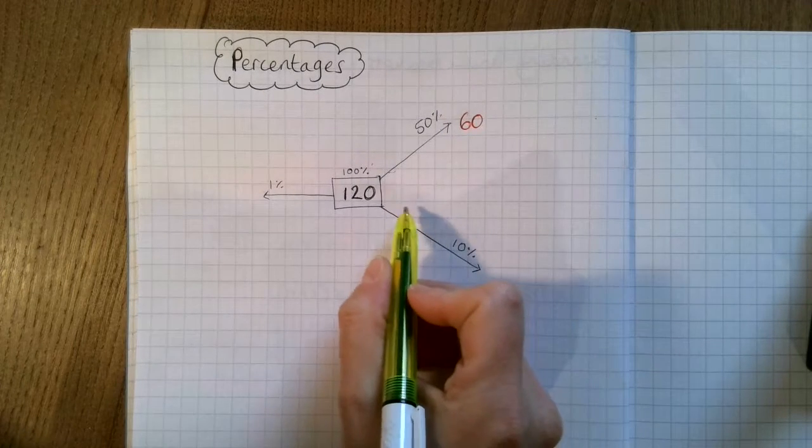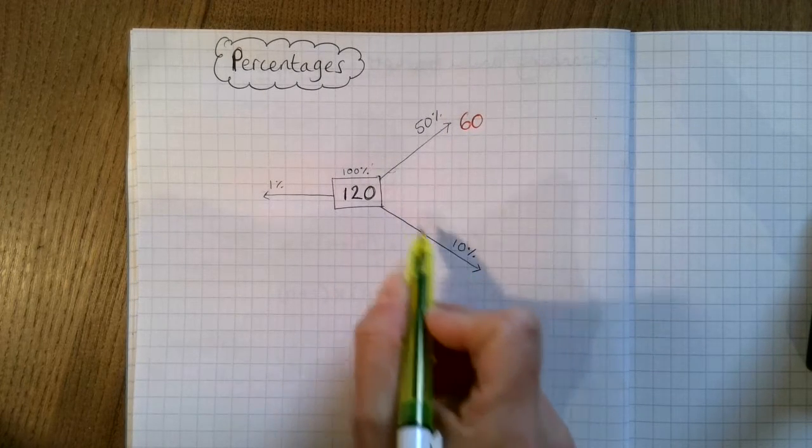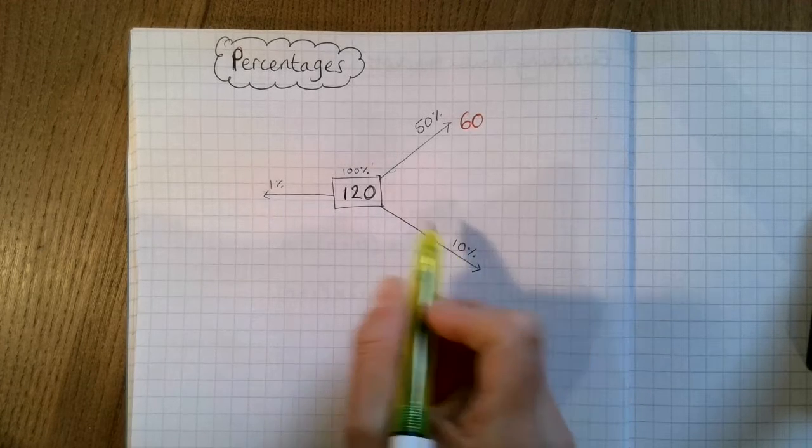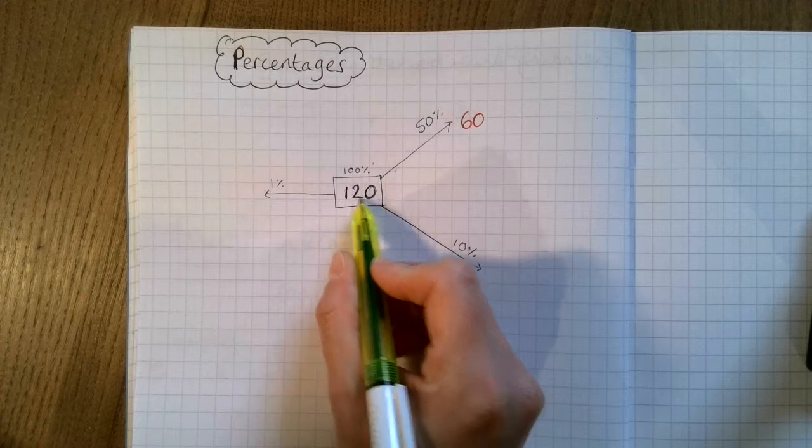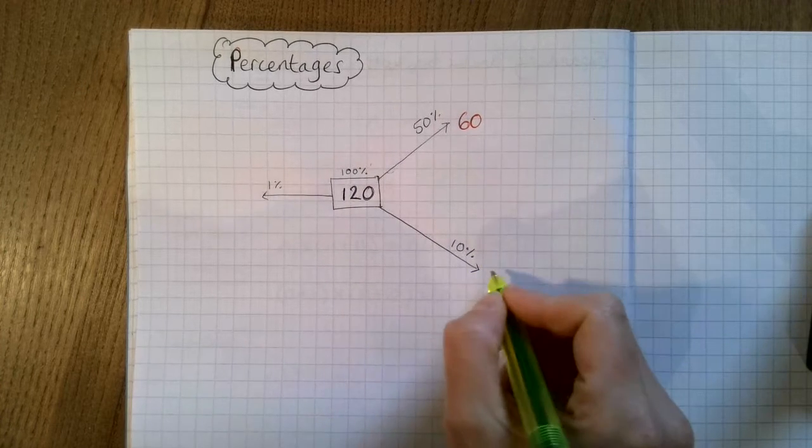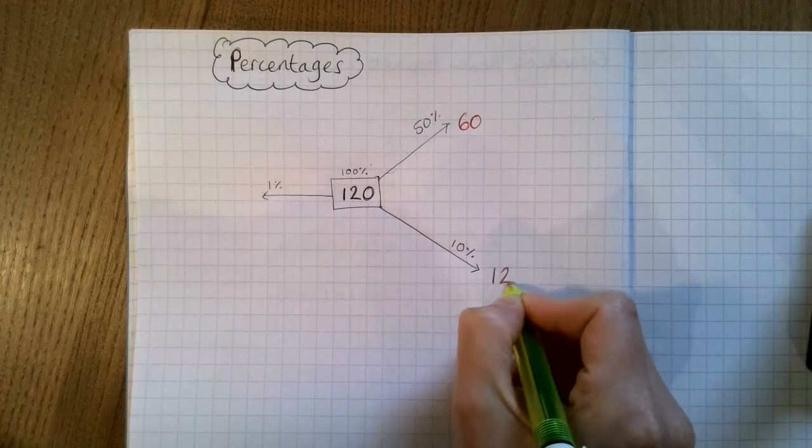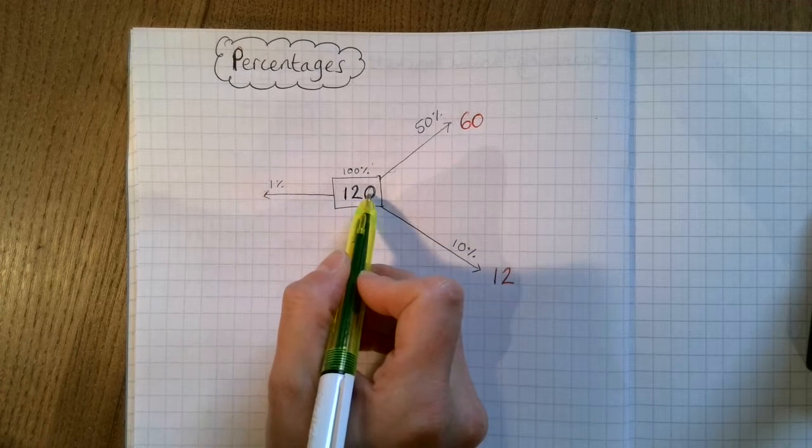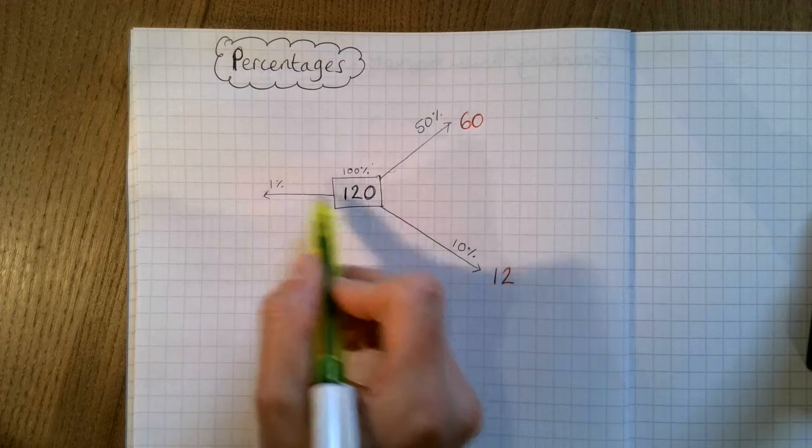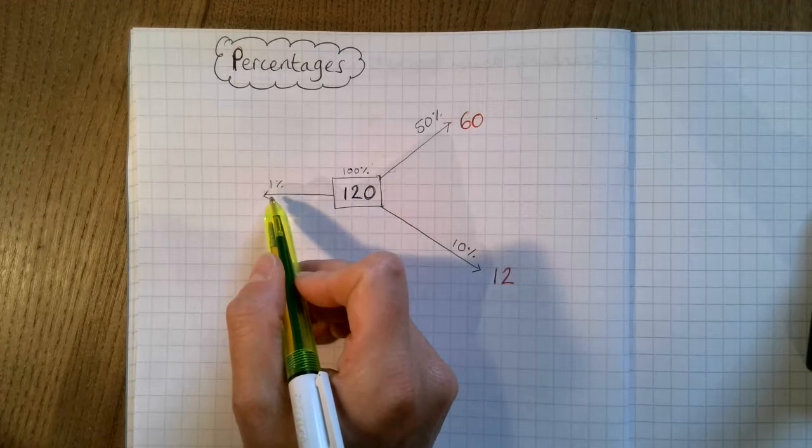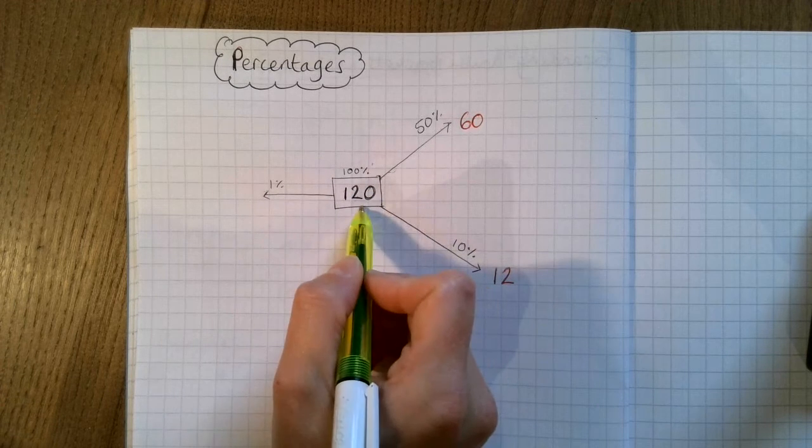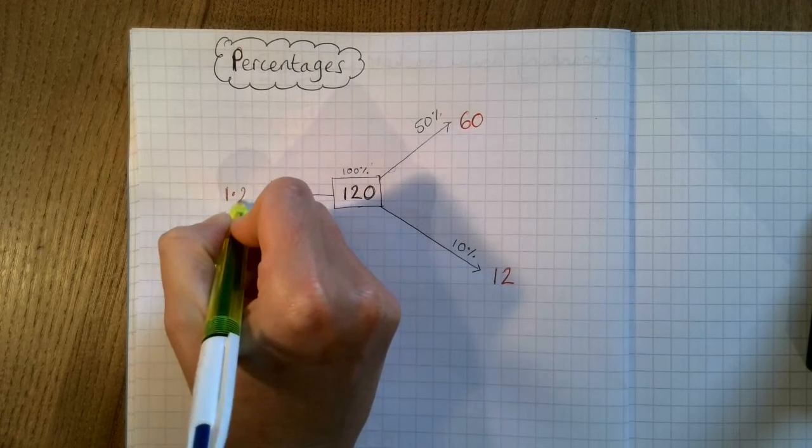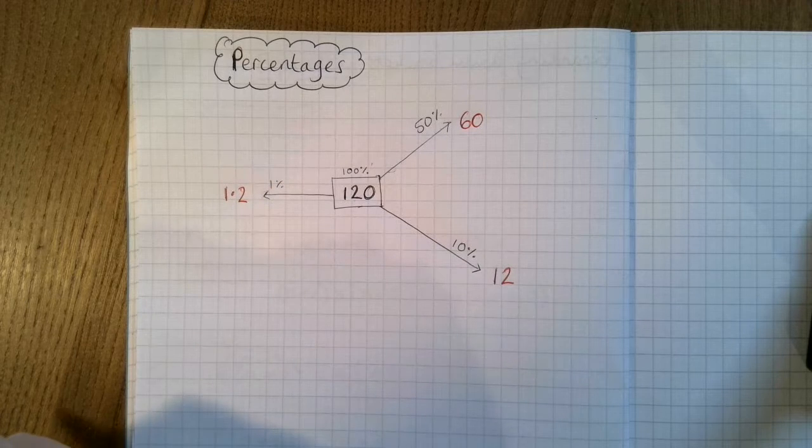To find 10% we need to divide by 10. So 120 divided by 10 is 12. And to find 1% of 120 or anything, we need to divide by 100. So 120 divided by 100 is 1.2.